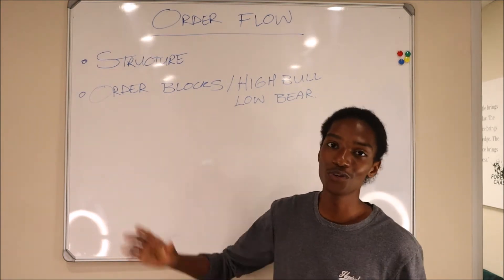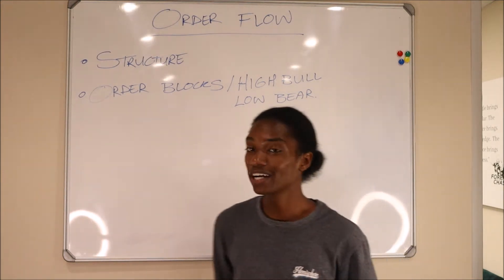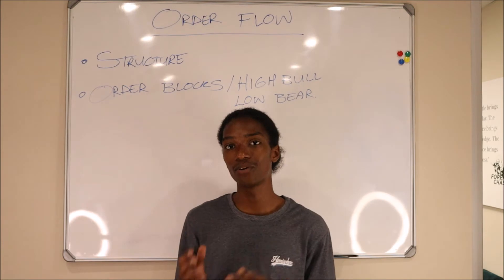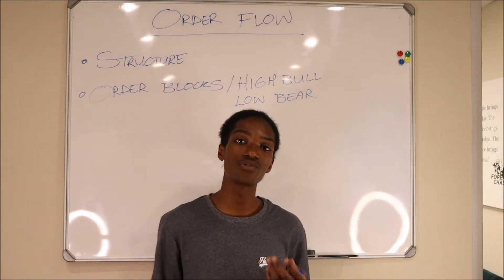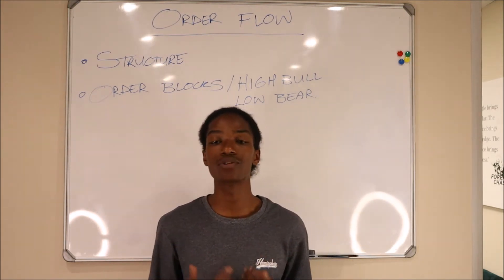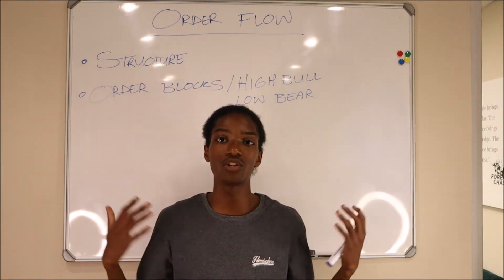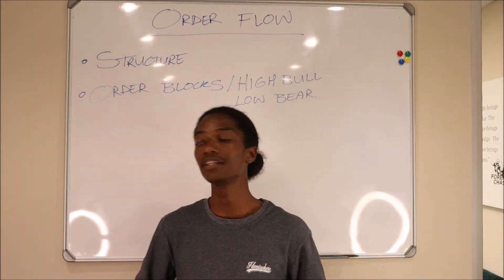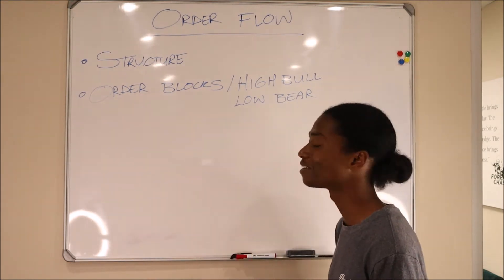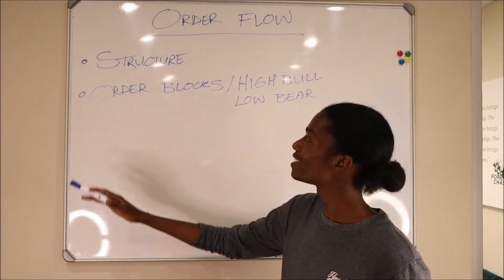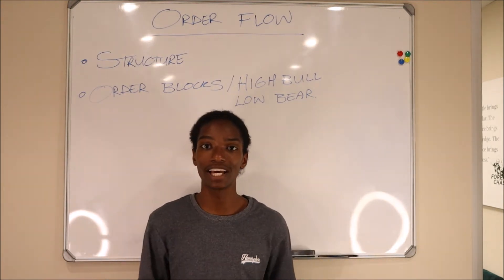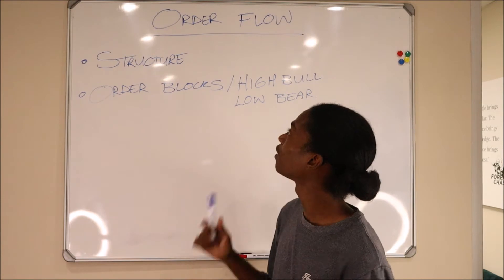To kick things off, we're going to get into identifying order flow. We'll first speak about generally what order flow is, then go into how to identify order flow, and also the different concepts I use to give me a general idea of where order flow is going and how I can capitalize on it to execute positions within the Forex market. We just have two points: the first is structure and the second is order blocks, or low bear and high bull candles.